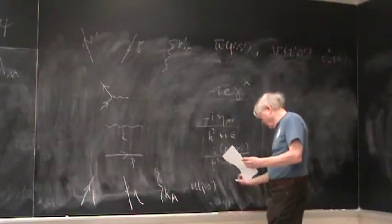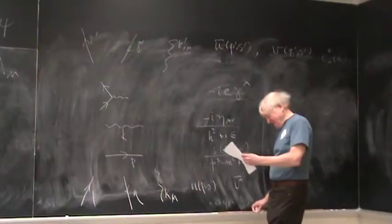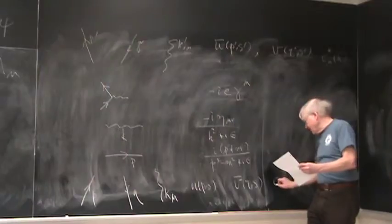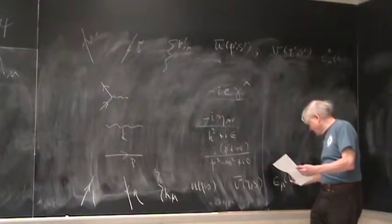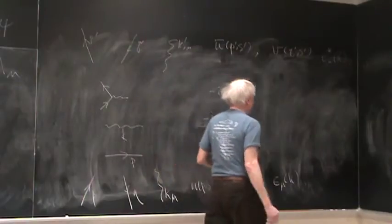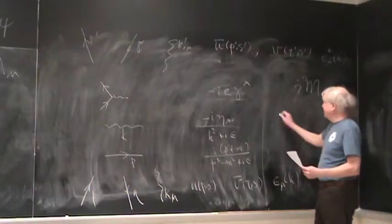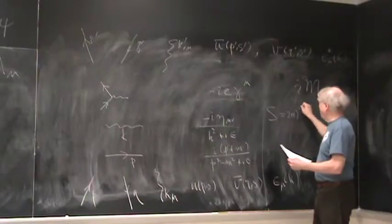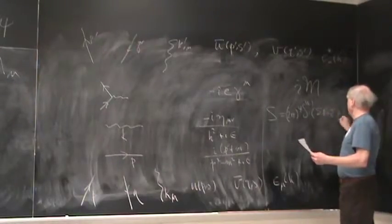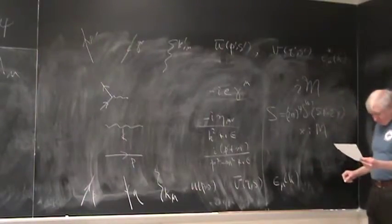And then finally these incoming ones. An incoming electron is u(p,s), otherwise known as Big Brown. An incoming positron is v̄(q,s), I'll get to it in a second. And then the incoming photon is the polarization ε_μ(k). So that's the whole thing.